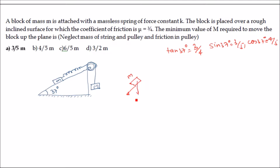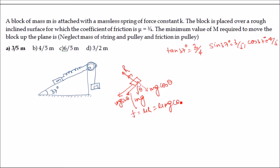For mass m on the inclined surface, mg acts downward. The component along the plane is mg sin θ, and the normal reaction R = mg cos θ. The frictional force equals μR = μmg cos θ. The spring force equals kx if the object has been moved by a distance x, so the spring force equals kx.